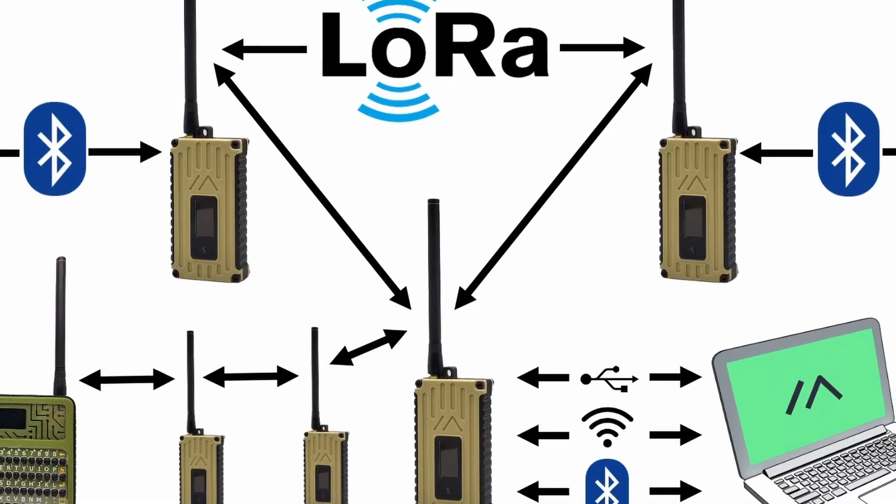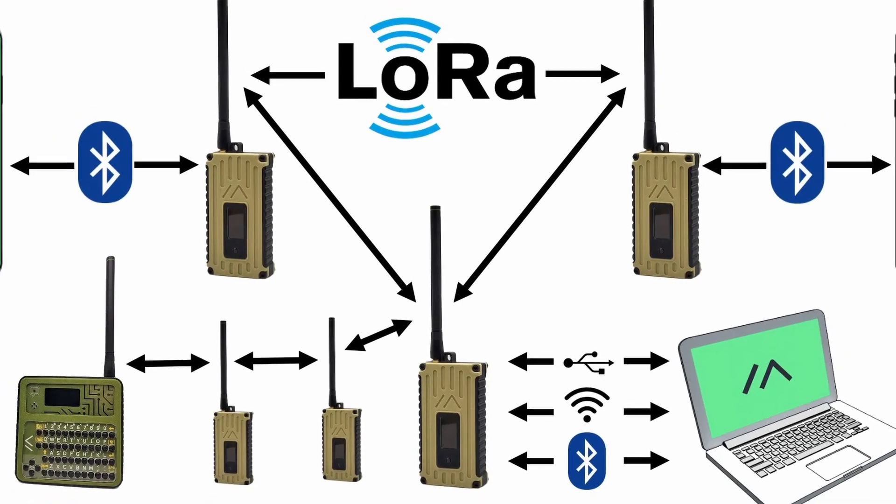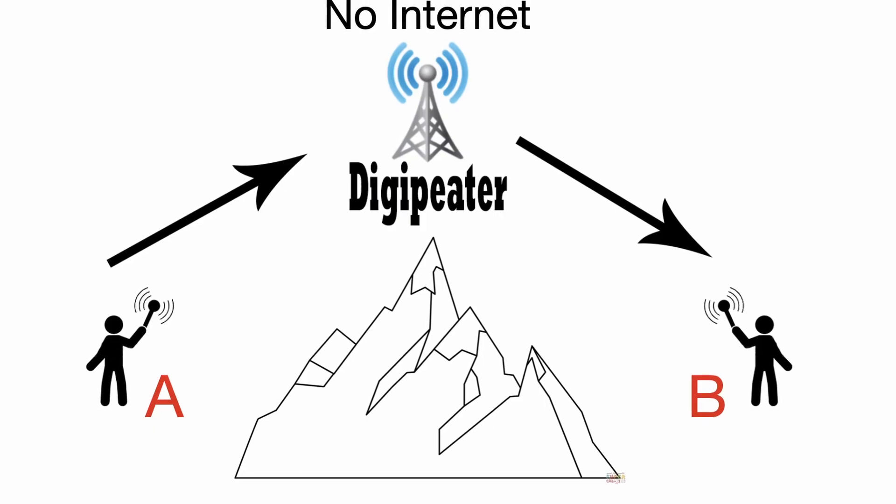Another similarity between the two is they can both work with or without the internet. If you've got two MeshTastic nodes that can see one another, or two or three in a line hopping messages between them, you don't need the internet for that to work. Same thing with APRS — as long as those two radios can see one another or go through a digipeater on a high hilltop, they don't need the internet. However, when we add the internet to it, we expand the capabilities of both APRS and MeshTastic.